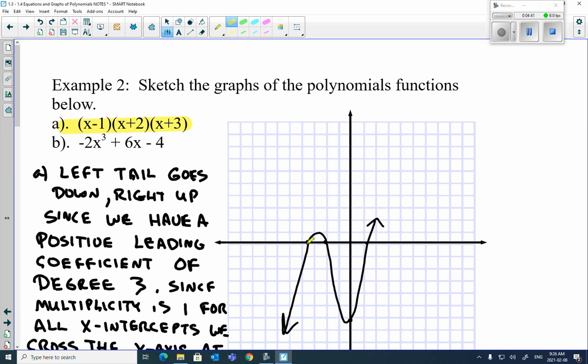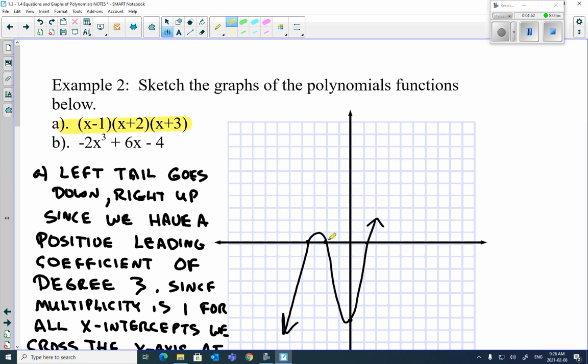So negative 3... my graph shifted over a bit. Sorry. Yeah, it shifted over big time here. Negative 3, negative 2, positive 1. Sorry about that on the graph there. So it goes down to the left, up to the right. Now, we also got to find the y-intercept.